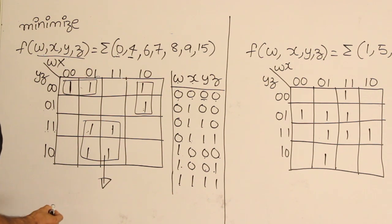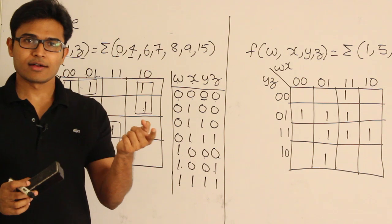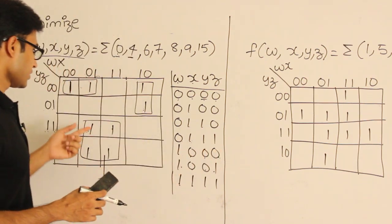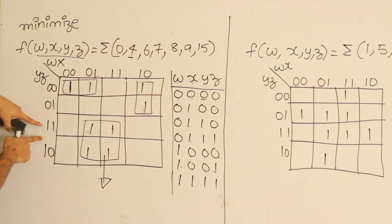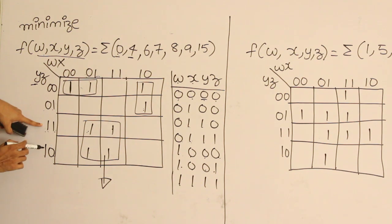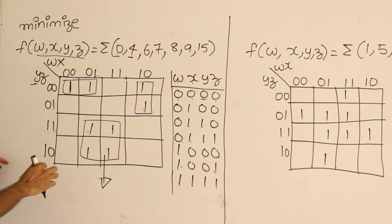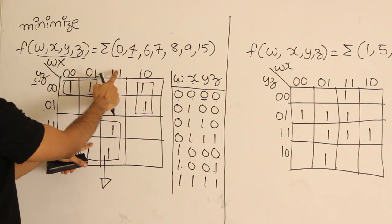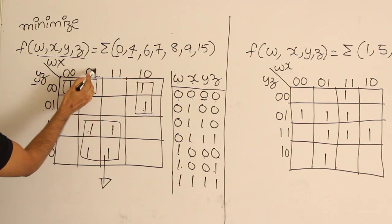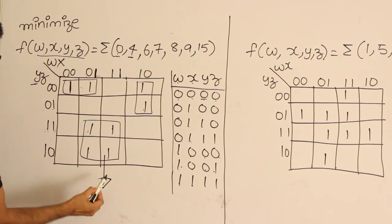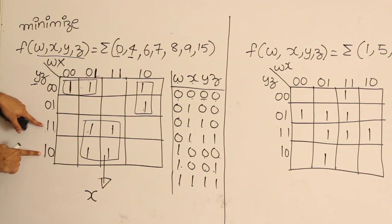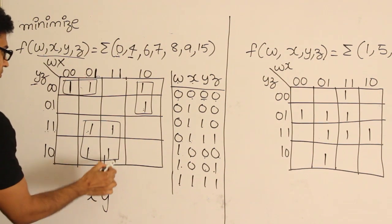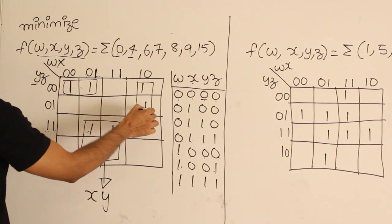For every subcube, you write its product term by identifying variables that are not changing. Changing variables are eliminated. For this subcube, looking at the two columns: X is not changing and W is changing, so W is dropped. X is 1 so we write X in true form. In these two rows, Y is not changing and Z is changing, so we leave Z and write Y in true form. Therefore this term is represented as XY.